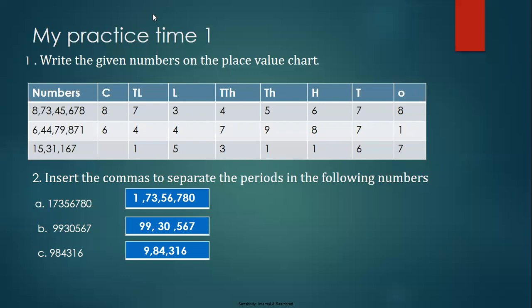The first question: write the given numbers on the place value chart. Here the given numbers have to be placed in a place value chart. Now here I have an example of an eight-digit number. The number will be placed according to its place value. So the eight-digit number goes like this.